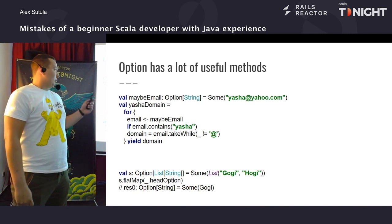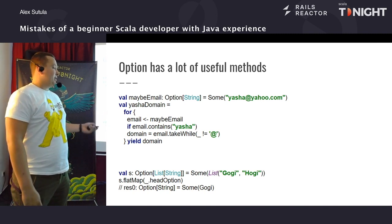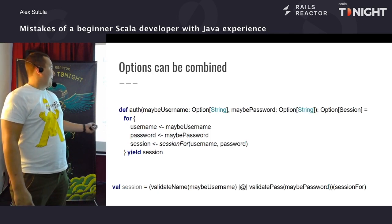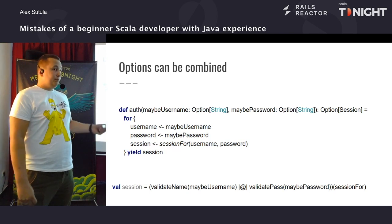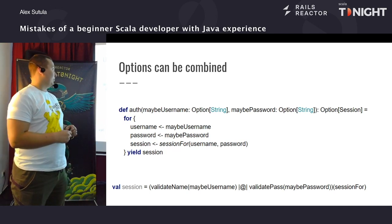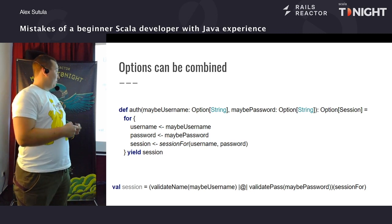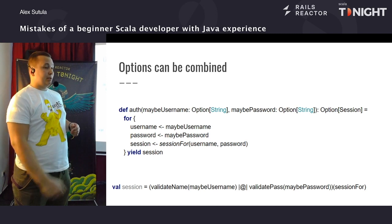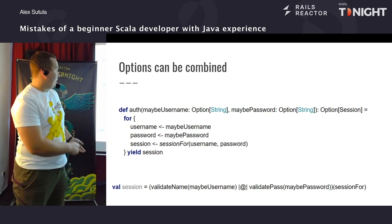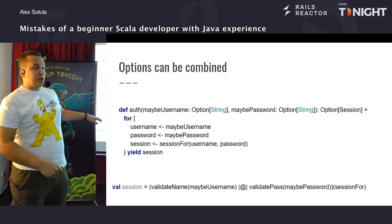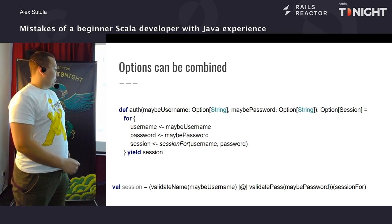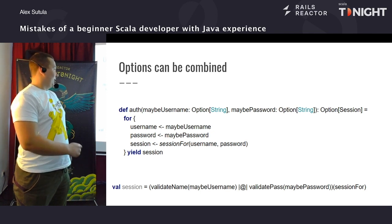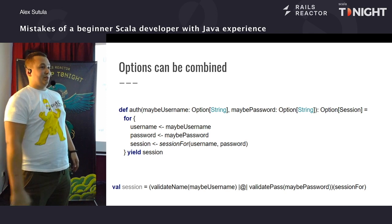Option також має купу корисних методів для взаємодії з ним: for comprehension, методи колекцій — це монада, тобто можемо користуватися. Також ще один плюс Option: у нас є купа імовірних змінних, які можуть бути null, ми їх обгортаємо, можемо їх скомбінувати, можемо потім застосувати на них метод, і потім вже ми не будемо писати ці if-и.